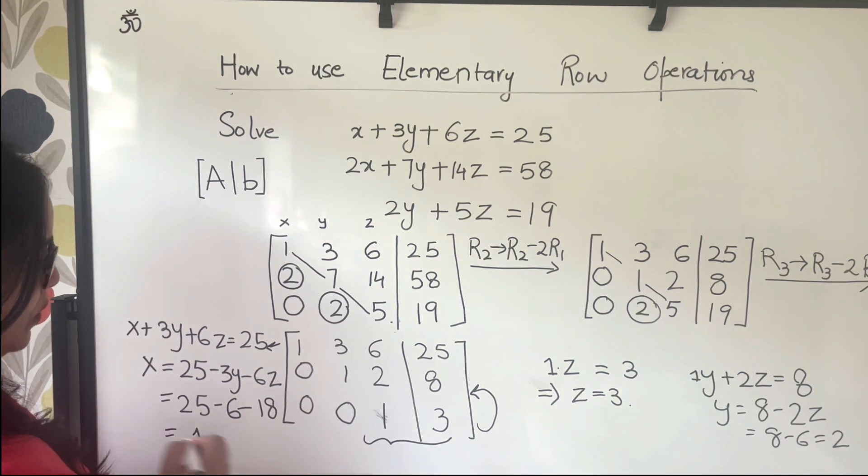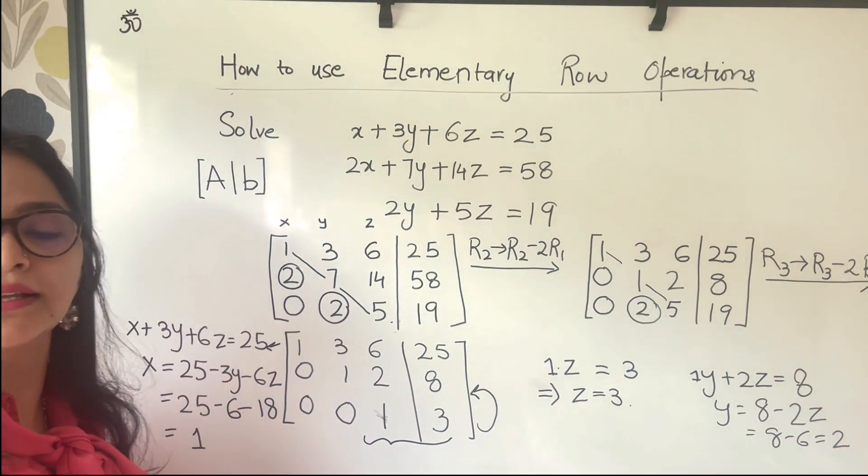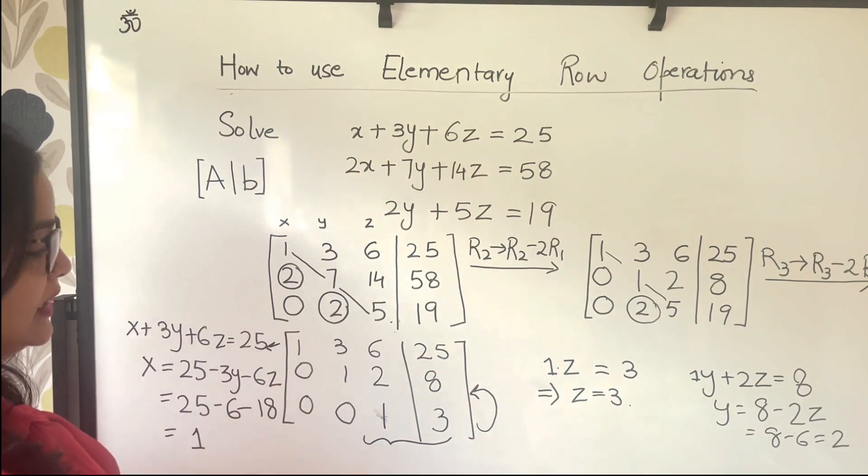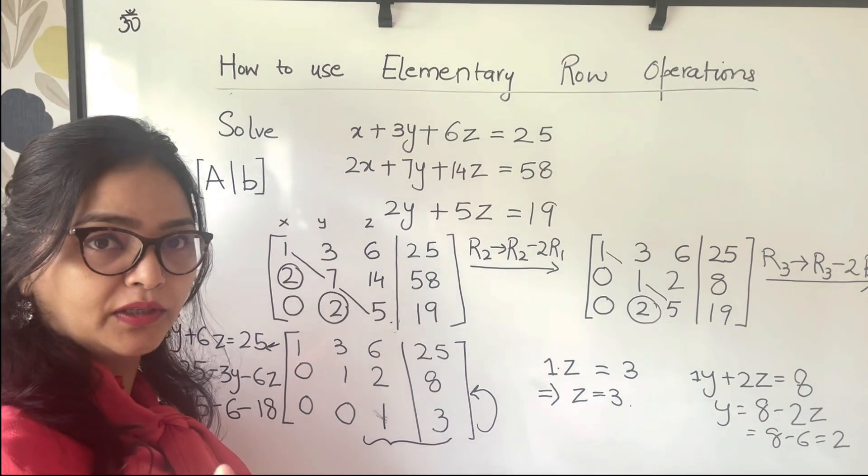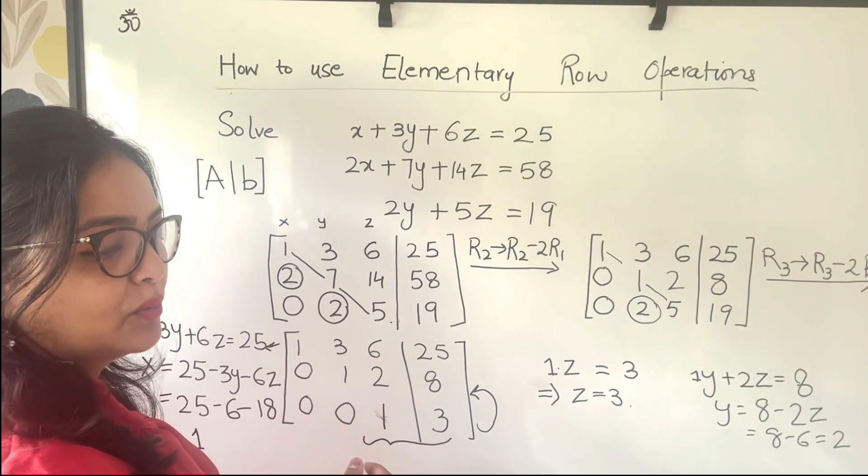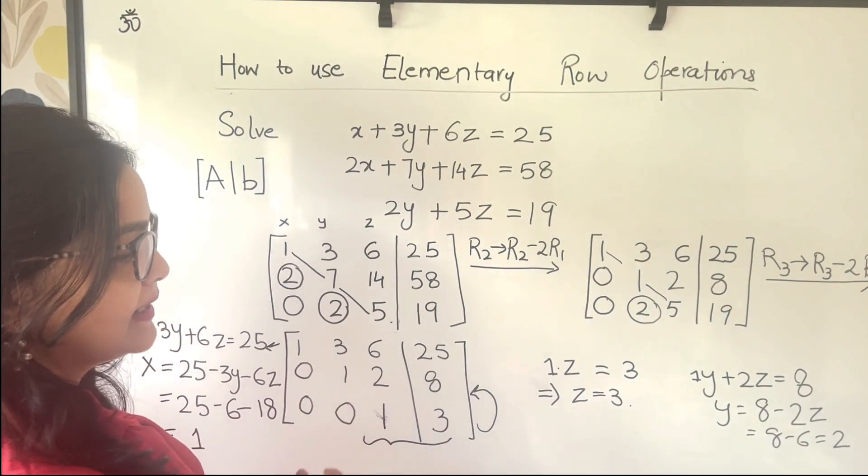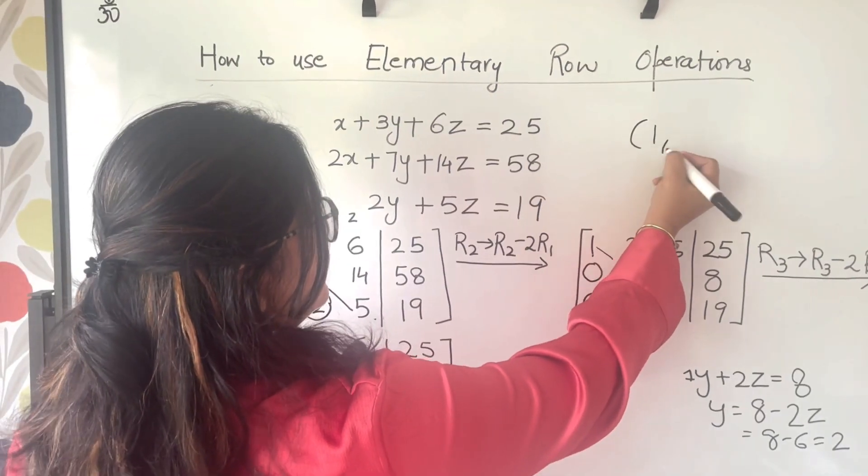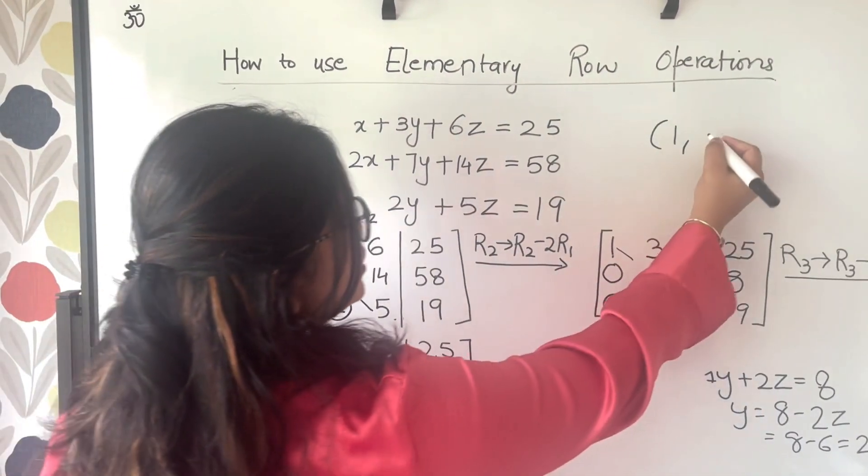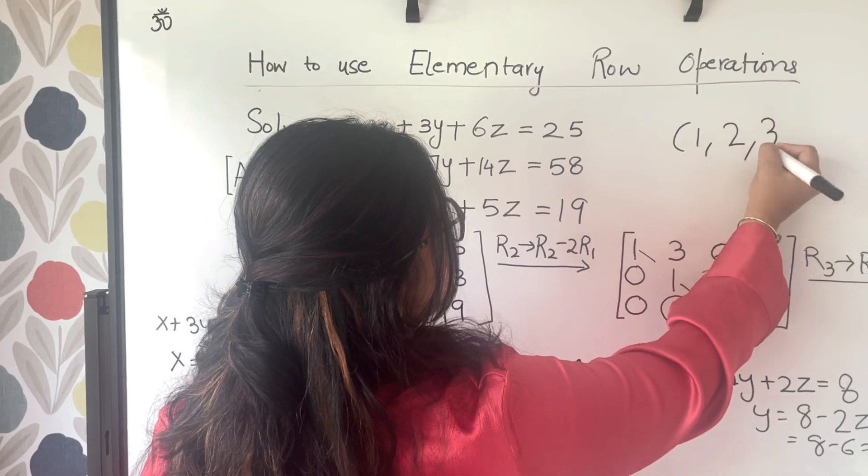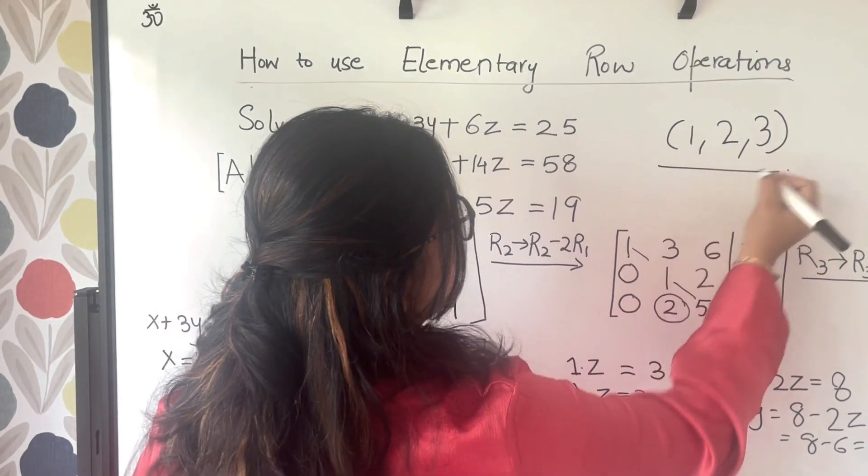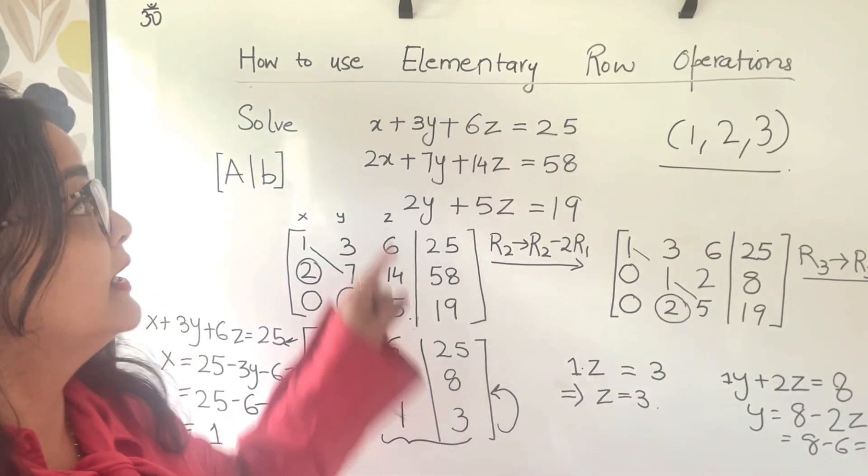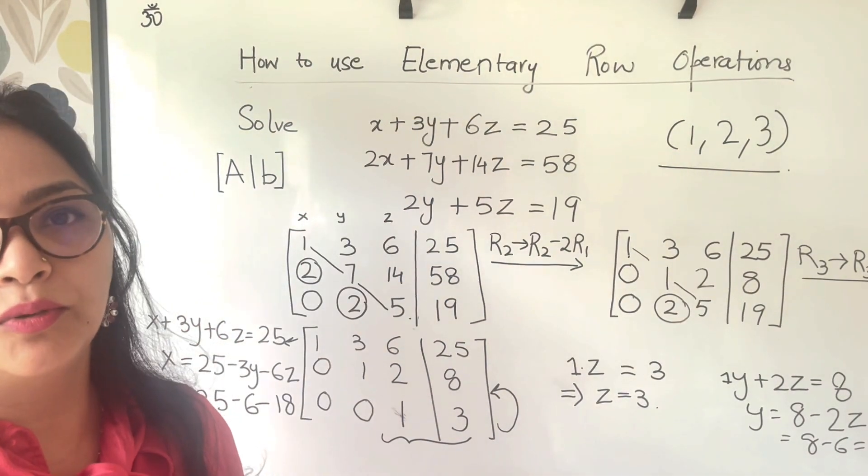So which gives you 1. So this means that the solution to this set of equations is a 3-tuple (x, y, z) which solves all the 3 equations at the same time, is 1, y turned out to be 2, and z turned out to be 3. This is a unique solution that we have found using elementary row operations.